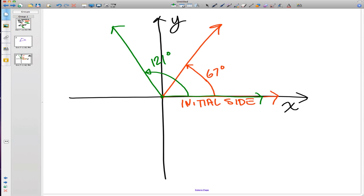This position that these angles are placed in the Cartesian coordinate system is referred to as the standard position, where I place the initial side on the x-axis and the vertex of the angle at the origin.